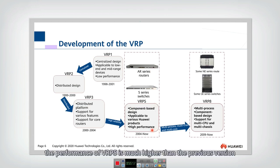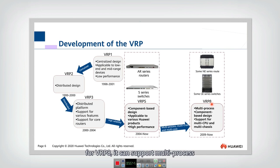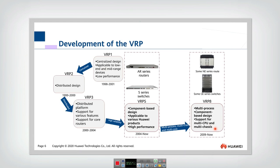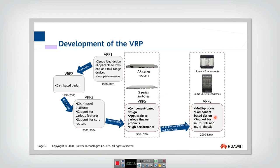The performance of VRP-5 is much higher than previous versions. Now we have VRP-8, which supports multi-process, multi-CPU, and multi-chassis. VRP-8 is also a component-based device.